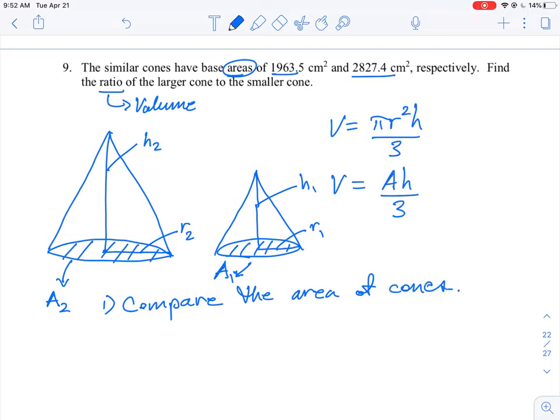So we do know that the area, we're going to do a ratio here of area 2 to area 1. So we know area 2 right now is 2827.4, and we know area 1 is 1963.5. So we know those two as the values.